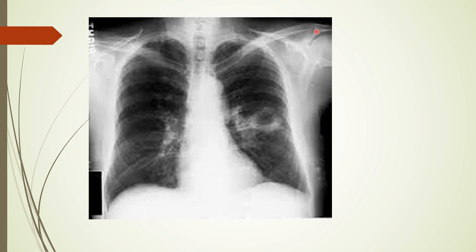What is the abnormality on this X-ray? There's a well-defined cavity over the left mid zone with a wall thickness of more than four millimeters. How do you say it's a cavity? You should be able to trace two-thirds of the circle. So what is a cavity, and what are the causes of cavitary lung diseases?